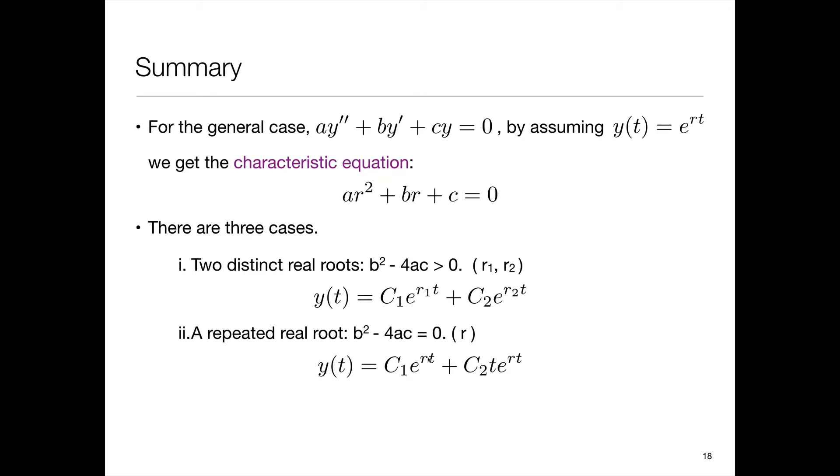In that case we get one solution from our ansatz e to the rt and we used reduction of order to find a second one, t e to the rt. The general solution will have the form c1 times e to the rt plus c2 times t e to the rt.